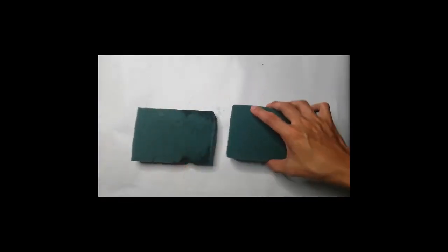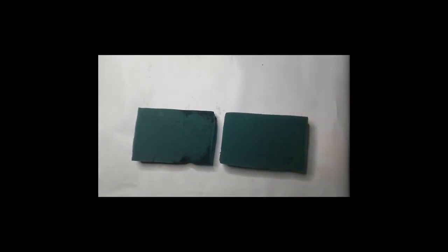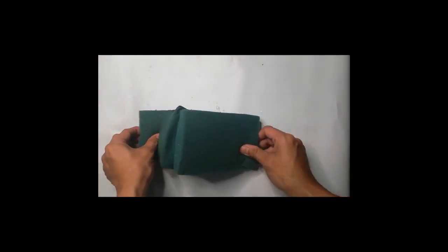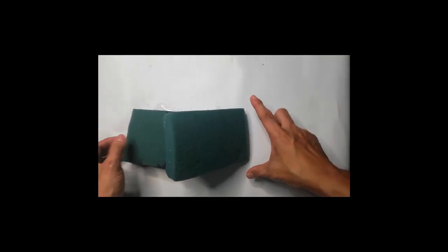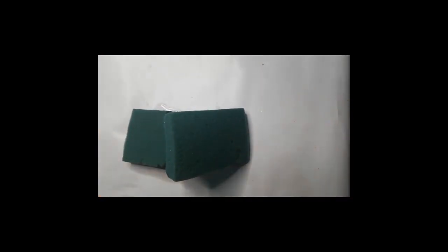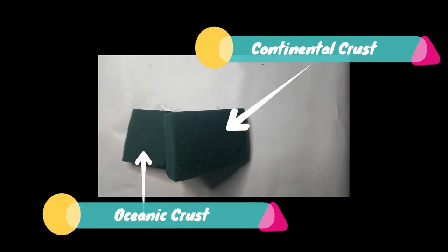Position the wet part of the foam at the center and push each end of the foam 4 cm inward or toward each other until they overlap. The wet foam represents the oceanic crust while the other one represents the continental crust. The continental crust curves upward on top of the oceanic crust due to its lesser density. The oceanic crust, which is denser, bends downward and stays below.